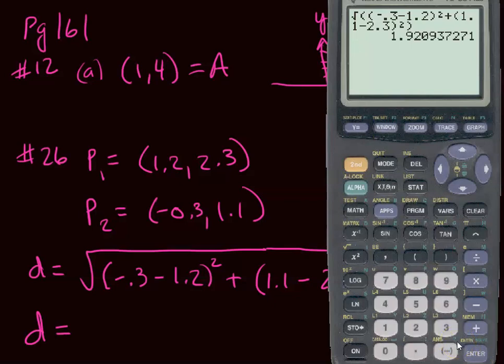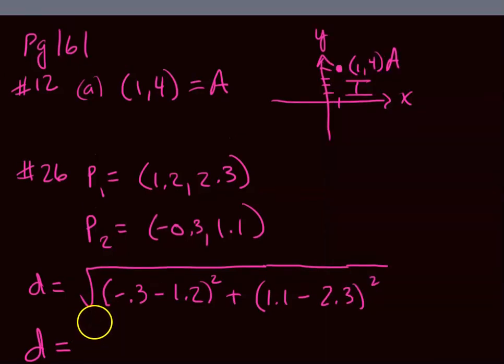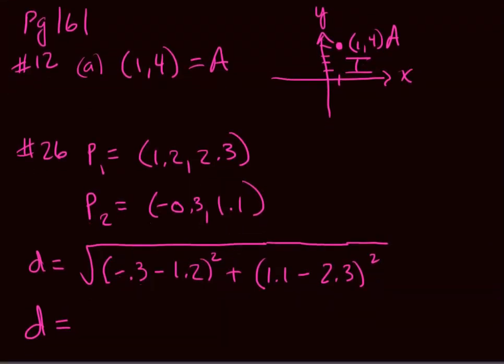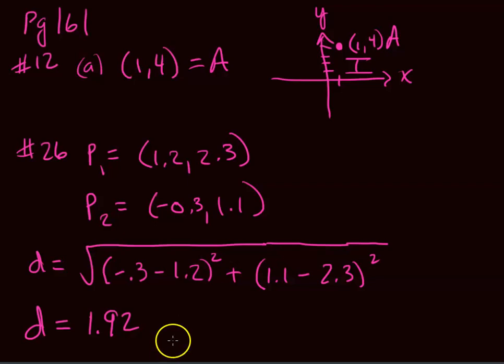1.92. Now, it doesn't say here how far to round that. I will probably have to tell you, round it to the nearest hundredth or something like that. So, this is 1.92. So, that shouldn't be too bad. You can use your calculator for some of those. Don't use it indiscriminately. Those numbers were a little harder to square than the normal numbers. Try to do it in your head if you can, and check yourself.